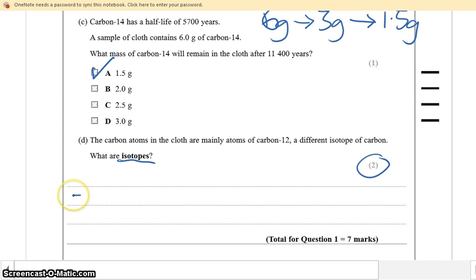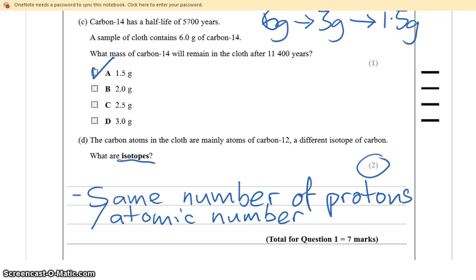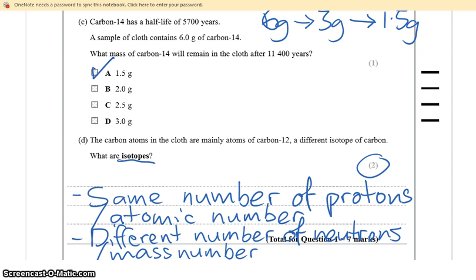What are isotopes? It's a two mark question, so they're looking for two key points. The two key points are that isotopes have got the same number of protons, or the same atomic number. For the second mark, you need to say they've got a different number of neutrons, or a different mass number.